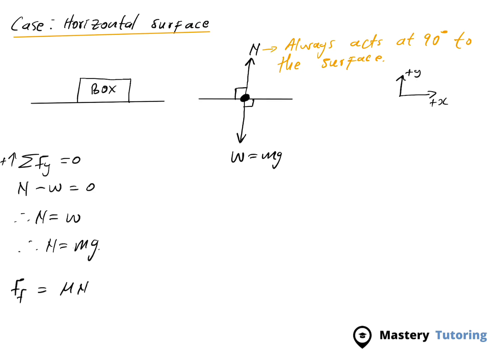For static friction on a horizontal surface, the frictional force is mu_S times mg. For kinetic friction on a horizontal surface, the frictional force is mu_K times mg. This is case one — the object is on a horizontal surface, and frictional force is given by mu times mg.